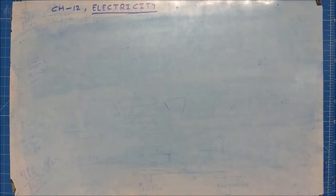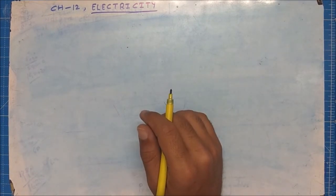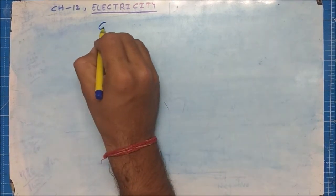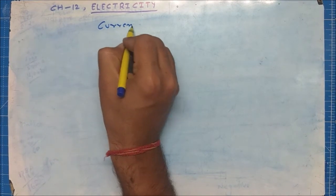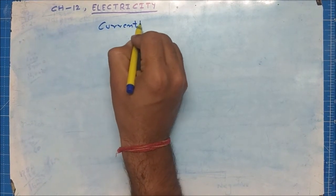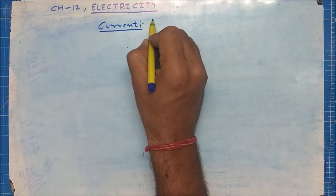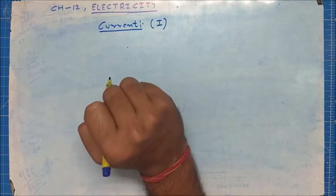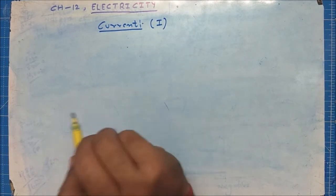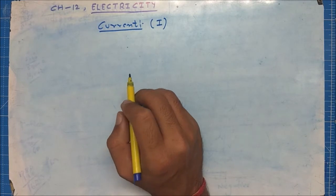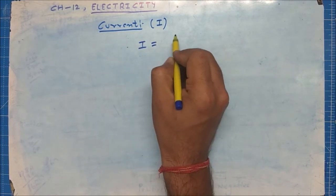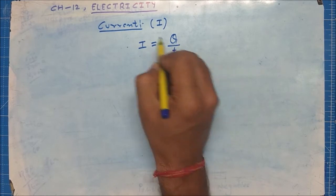So we have seen that if charge flows, then current also flows. Now the question is: what is current, what is the definition of current? Current is represented with the symbol capital I, and the formula for current is I = Q / T.